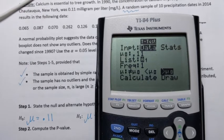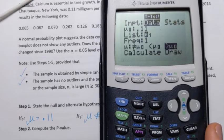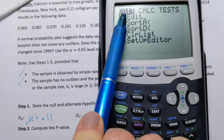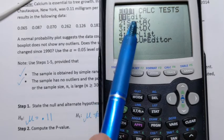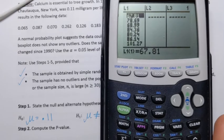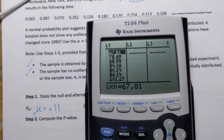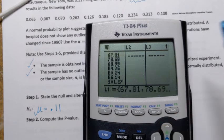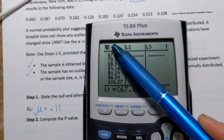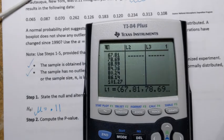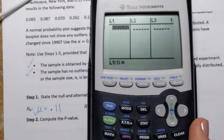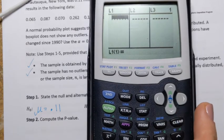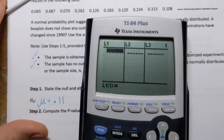So I'll go ahead and enter the data right now. I need to press STAT again. I'm staying here in Edit. Line number one, I'll press Enter, and that's where I will enter my sample. In L1, I already have some information from some other example, so I will highlight L1, go up to highlight L1, press Clear, Enter, and that will clear the list.